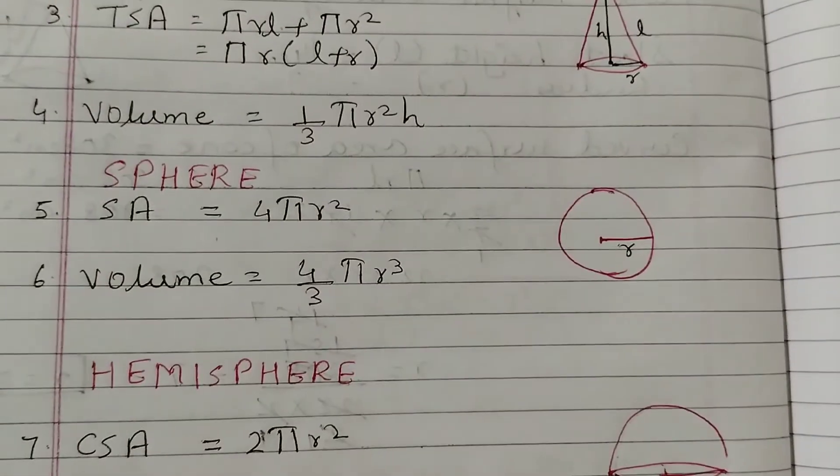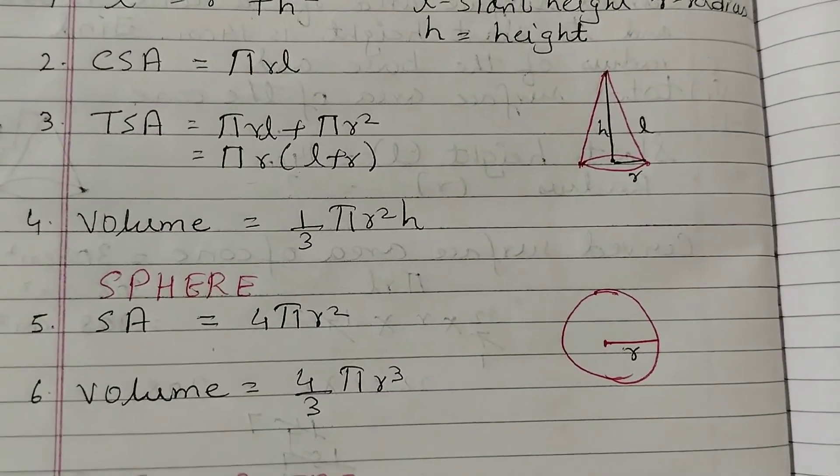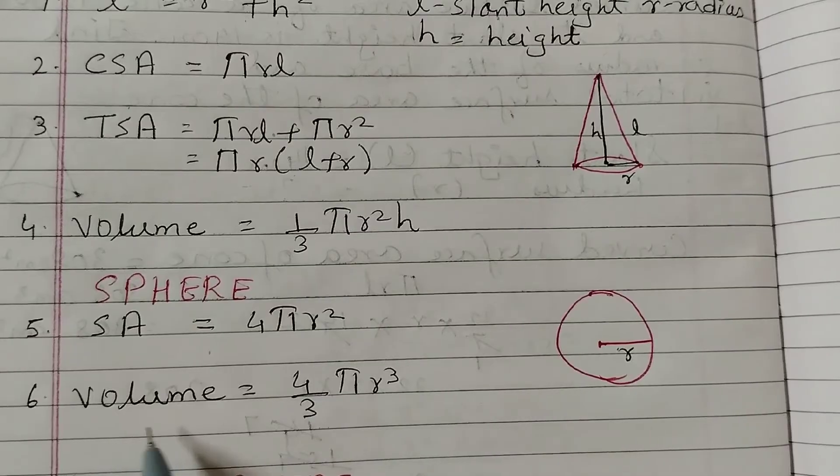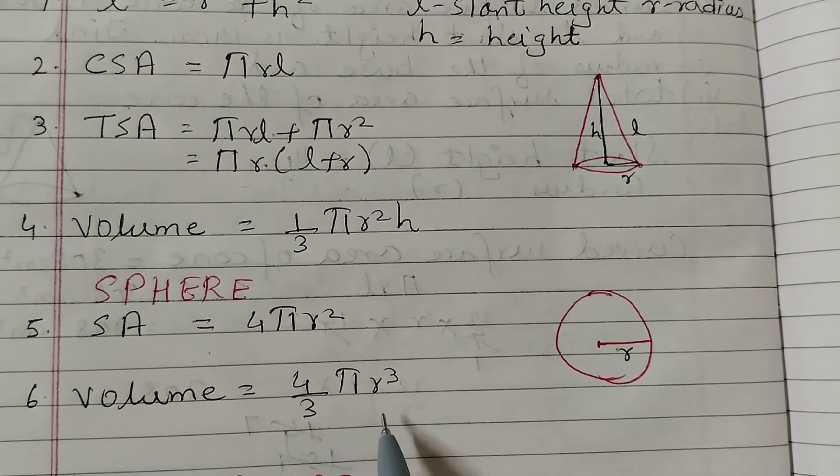Coming to the next one, the sphere. Surface area is 4 pi R squared, and the volume is 4 by 3 pi R cubed.